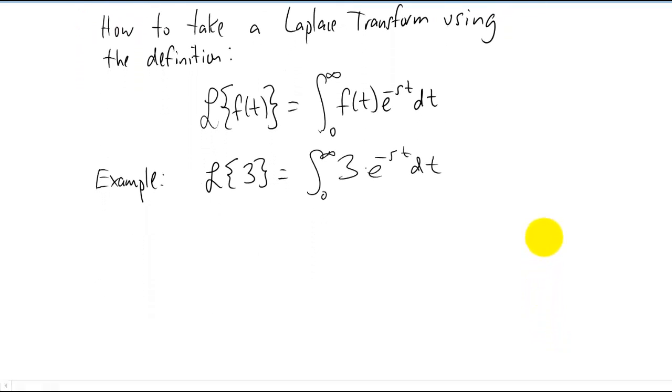When you integrate an exponential that has a constant times the variable up in your argument there, you just divide by that constant. So you're going to get actually negative three over s e to the negative s t evaluated from zero to infinity. And since the upper limit of integration on this integral here is infinity, this is actually an improper integral.